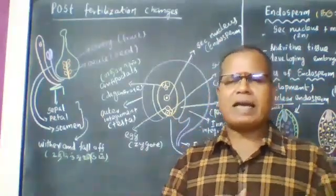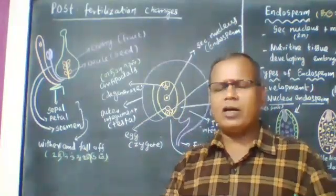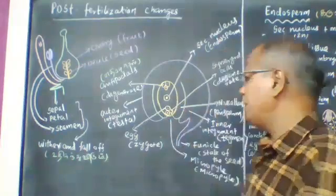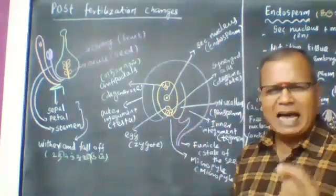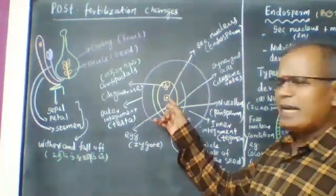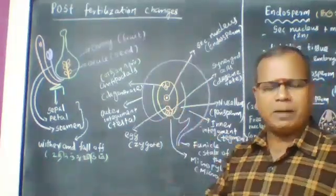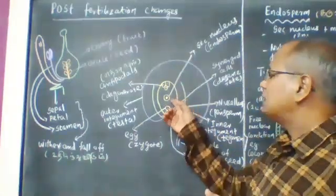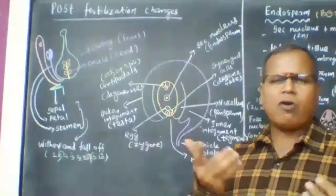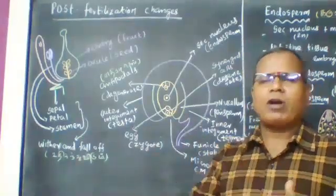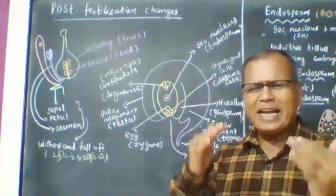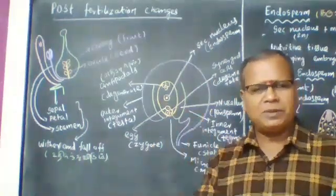Fusion of male and female gametes — the male gametes come from the microspore and pollen. One male gamete fuses with the egg to form a diploid zygote. Another male gamete fuses with the secondary nucleus to form diploid endosperm. These are the endosperm changes.